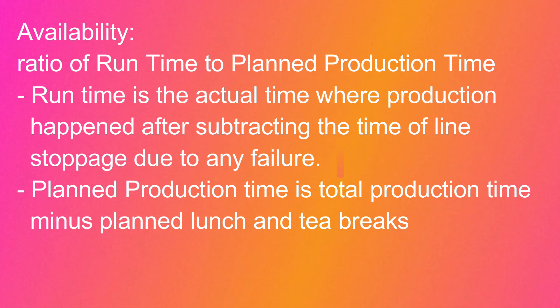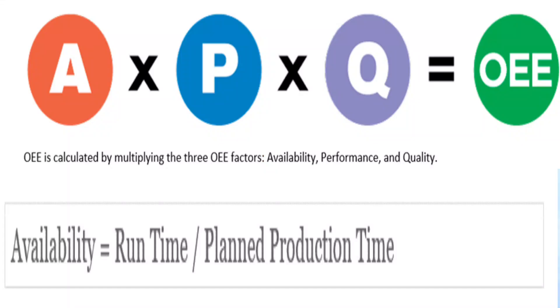When we talk about Availability, our intent is to understand the ratio of run time to planned production time. Run time is the actual time where production happened after subtracting time for line stoppages — such as machine failure, tool failure, planned changeover, or operator non-availability. Planned production time is total production time minus planned breaks like lunch or tea breaks. So the formula for Availability is: Run Time divided by Planned Production Time.